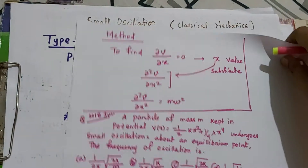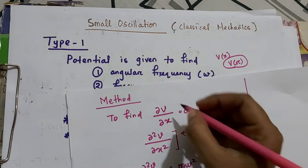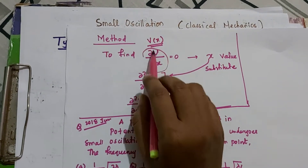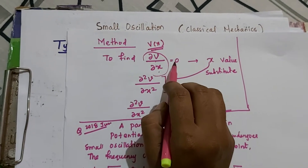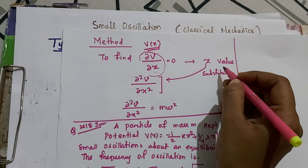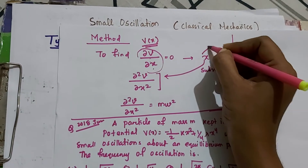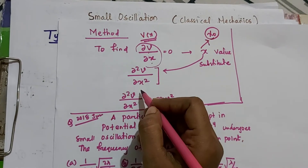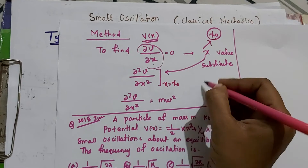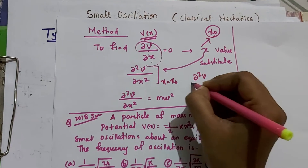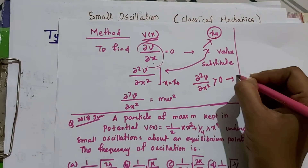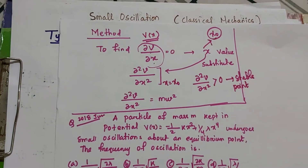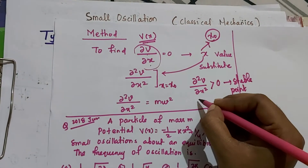When the potential is given, first you have to find the first derivative: ∂V/∂x = 0. From that, find the value of x, which we denote as x₀. At this x₀ point, you have to find ∂²V/∂x². If ∂²V/∂x² > 0, this is a stable point, and around this stable point we always find our angular frequency.